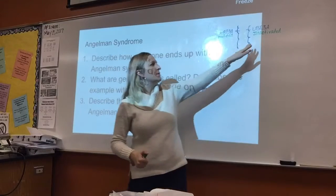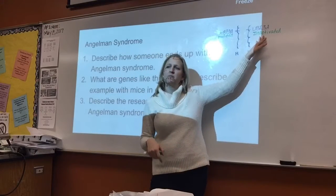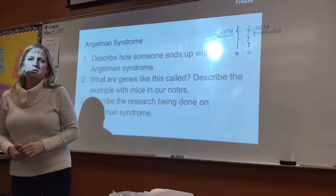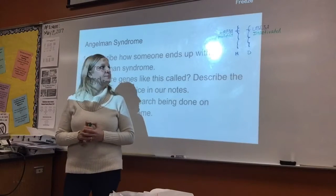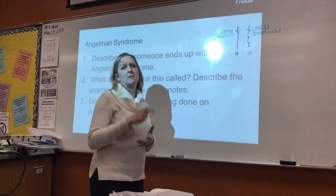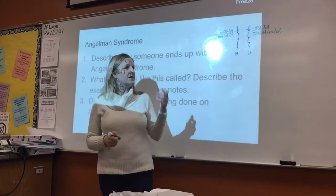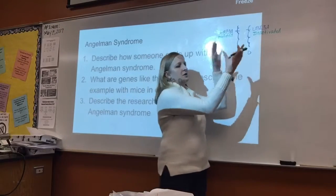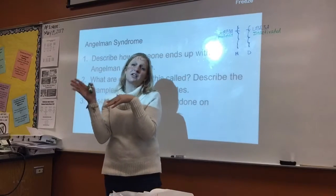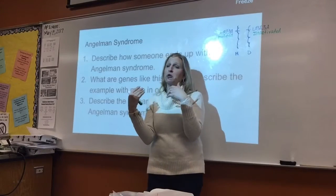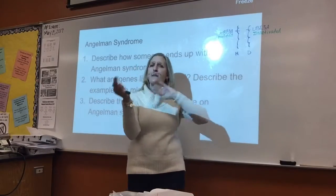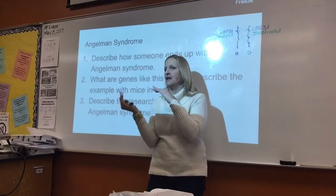So can somebody tell me how a gene becomes inactivated? It's methylated — adding methyl groups to it. The cell adds these chemical groups to the gene, and that turns the gene off. We're going to learn in a couple of chapters about turning on and off genes. Certain genes we don't want on all the time, so we turn them off at certain times and turn them on at others. Adding methyl groups is one way that the cell turns genes on and off.